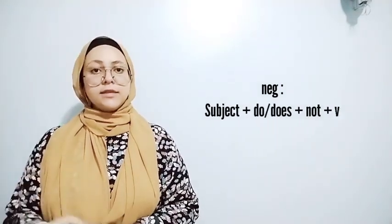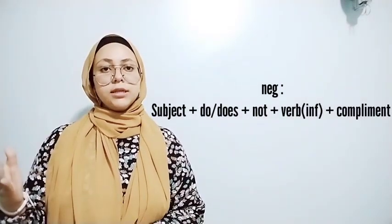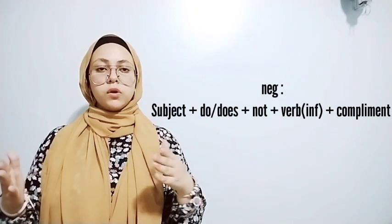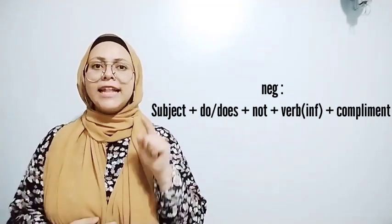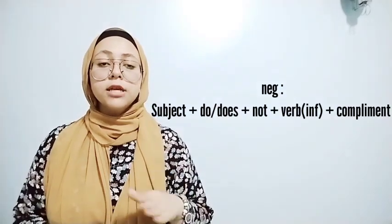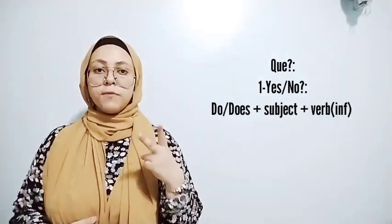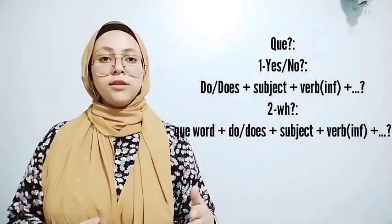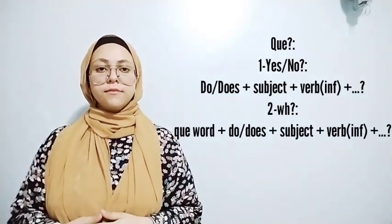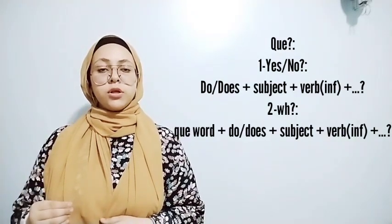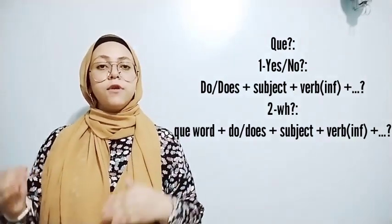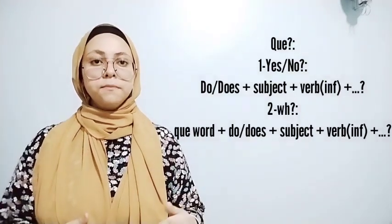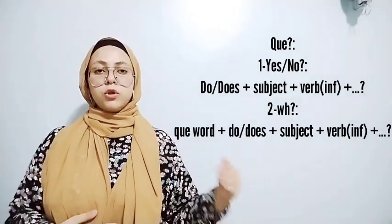The negative sentence is: subject plus do or does plus not plus verb in infinitive form plus complement. For questions, we have two types: yes/no questions and WH questions. The yes/no question is formed with do or does plus subject plus verb in infinitive form plus the question mark.